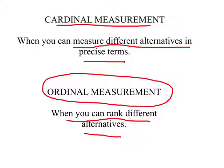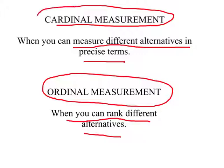Initially, philosophers and economists believed that eventually we would be able to measure utility in terms of cardinal measurement — devising a scale to measure it in precise terms. Later that idea was dropped. However, for the purposes of this course, we will assume that utility is measurable in precise terms, and this is called cardinal utility.